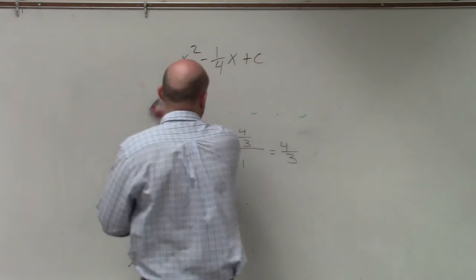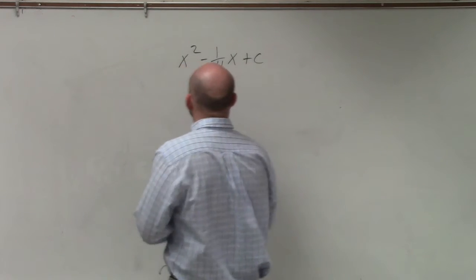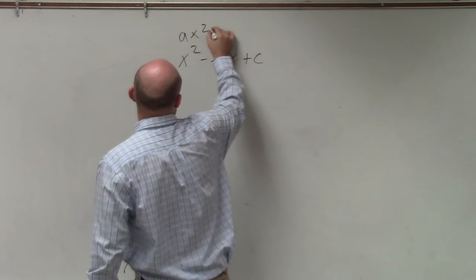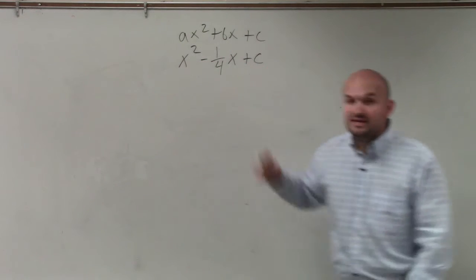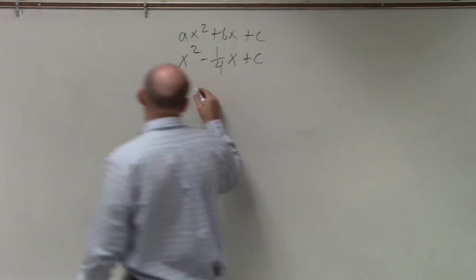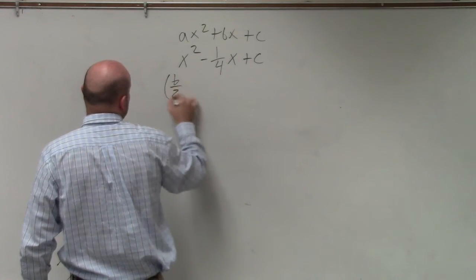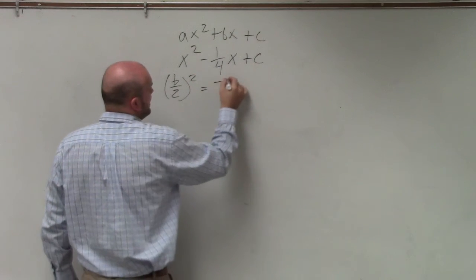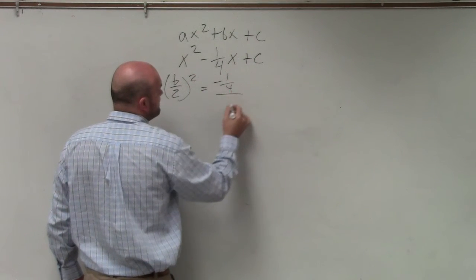So let's look at this problem. We know our ax squared plus bx plus c. Our b is negative one fourth. To find the value that completes the square, we've got to do b divided by 2 squared. So I have negative one fourth divided by 2.